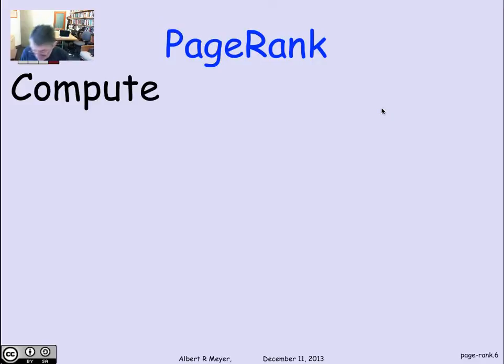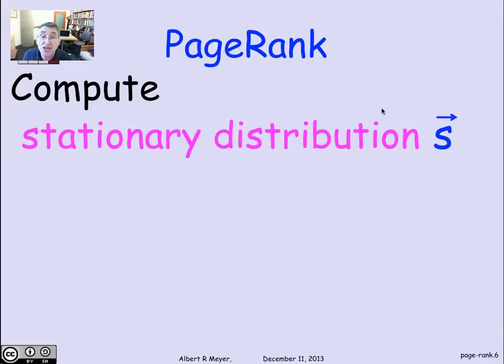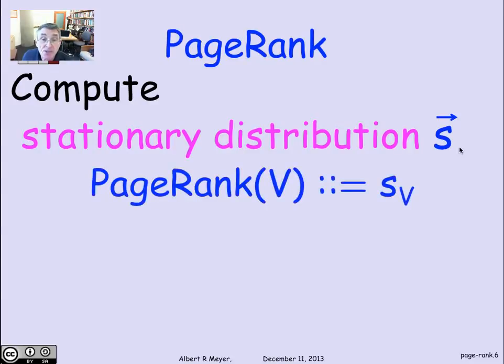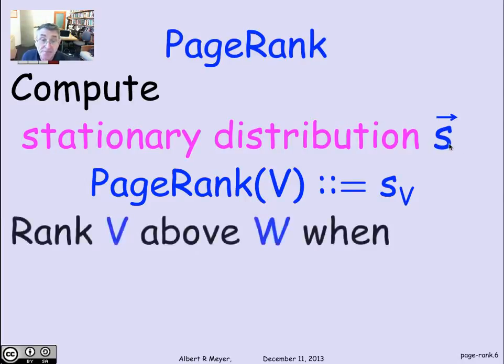PageRank is obtained by computing a stationary distribution for the World Wide Web. S-bar is a vector of length trillions, the coordinates are indexed by web pages. We calculate the stable distribution, and the PageRank of a page is its probability in the stationary distribution, the V component of S. We'll rank V above W when the probability of being in V is higher than the probability of being in W.